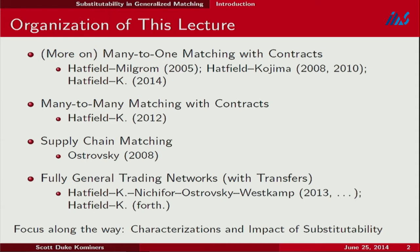Then I'll talk about generalizations. As promised when I mentioned the roommate problem, I'll come back to settings where there aren't just two sides to the market. I'll talk about Mike Ostrovsky's work on supply chain matching, where there are many sides to the market — a series of firms organized into a supply chain. At the end, I'll show that when you add transfers back into the model, thinking about generalizations of Kelso-Crawford, you can move past supply chain matching and think about arbitrary trading networks.